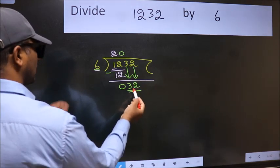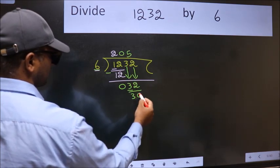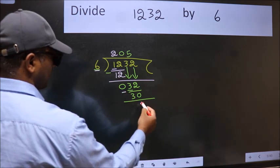A number close to 32 in 6 table is 6 times 5, 30. Now we subtract. We get 2.